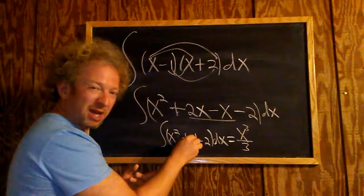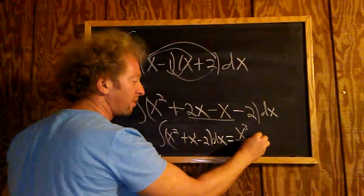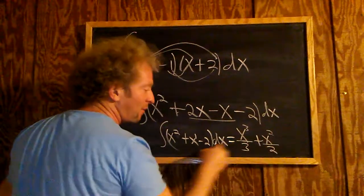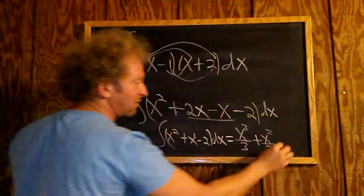Here's a 1, so we get x squared, because 1 plus 1 is 2. So plus x squared. And then you divide by the number, so divide by 2. And then whenever there's a number, you just put an x next to it. So minus 2x.